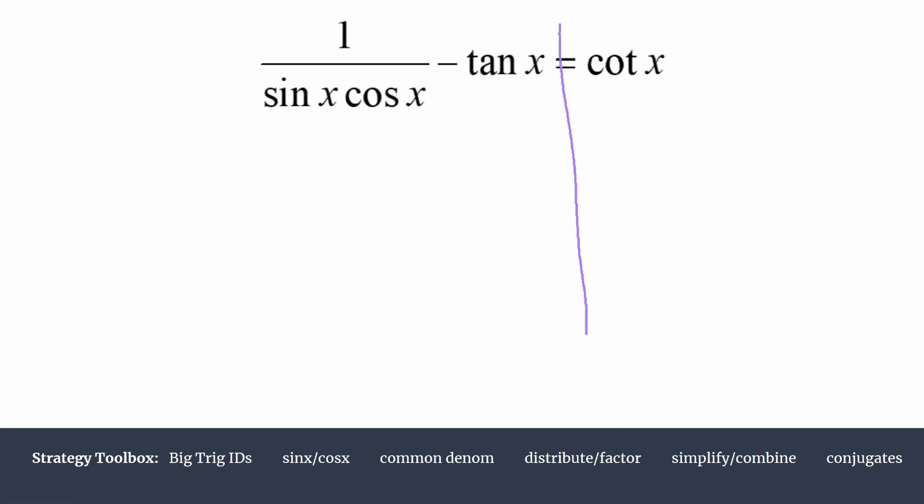Draw a vertical bar here so you aren't tempted to work on the right side at all. We'll rewrite our first term: we have 1 over sine x cosine x. Those are already in terms of sine and cosine. We're going to rewrite tangent as sine over cosine.